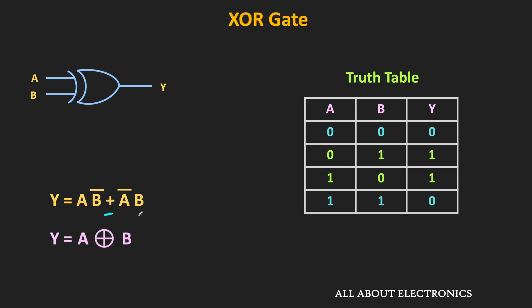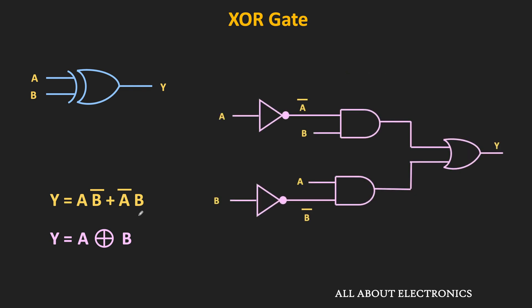If this XOR gate is not readily available, it can also be implemented with AND, OR, and NOT gates. As per this Boolean expression, we require A' and B'. Using the NOT gates, these A' and B' signals are generated. This first AND gate performs the ANDing of A' and B', while the second AND gate performs the ANDing of A and B. Finally, the logic OR operation of these two outputs is performed using the OR gate. That is how the two-input XOR gate can be implemented using AND, OR, and NOT gates.